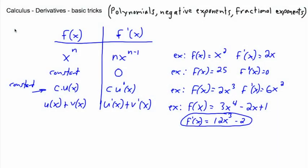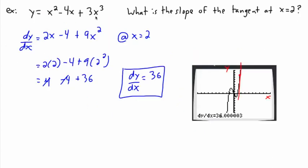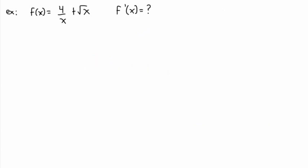I'd like to give you some more examples of how to use some of these basic polynomial tricks. Remember the main trick: if we have x to the power of something, to do the derivative we take that something, put it in front, and then make x to one less exponent than it was. We just had an example of this, so let's look at another one.